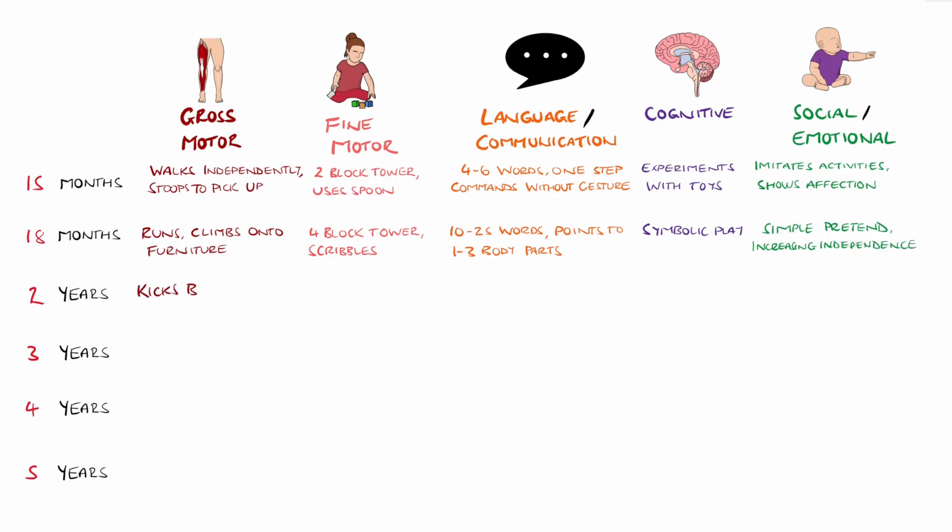Gross motor milestones at the age of two include kicking a ball or walking up and down stairs with aid. In fine motor, they can stack six blocks as well as copy a line. Their language now develops to include two to three word phrases and a 50-plus word vocabulary. They develop new problem-solving strategies without rehearsal, and their social development starts to feature tantrums and parallel play.